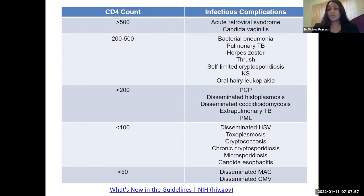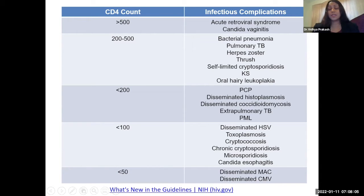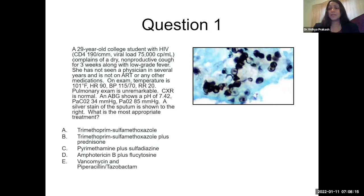This chart is useful as a quick reference because it really helps you narrow your differential based on the patient's CD4 count. I also have a link to what's new in the guidelines, which takes you directly to guidelines for diagnosis and treatment of opportunistic infections in HIV patients. I'd like to keep this case-based, so consider this case.